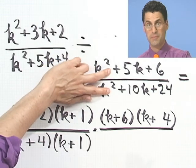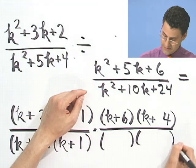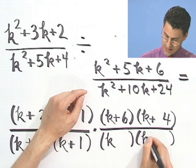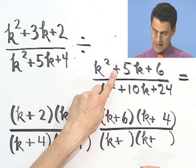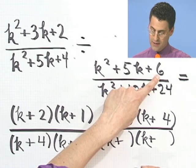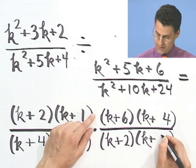And now the bottom, which used to be the top, but now I'm flipping, so I'm dividing and now I'm multiplying, can be factored as k and k. Same sign, positive. And what do we have here? Product is 6. Sum is going to be 5. That sounds like a 2 and a 3 to me.